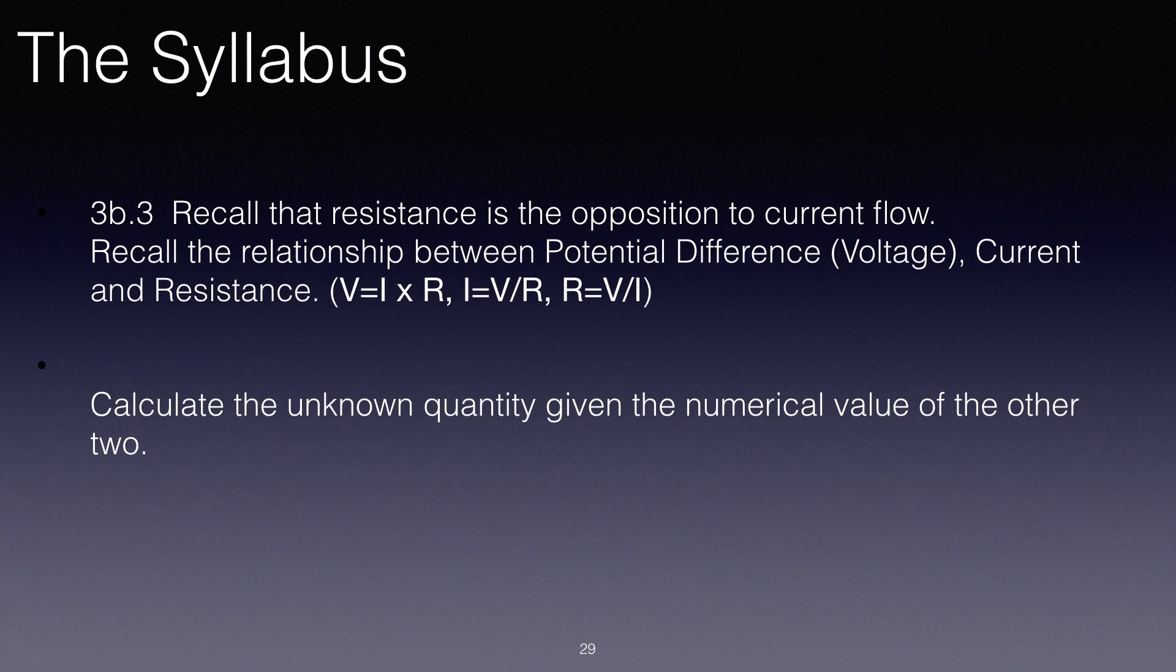Going through the syllabus one more time, recall that resistance is the opposition to current flow. Recall the relationship between potential difference, otherwise called voltage, current, and resistance. You should be able to generate the formula V equals IR, I equals V over R, and R equals V over I. And calculate the unknown quantity given the numerical value of the other two.